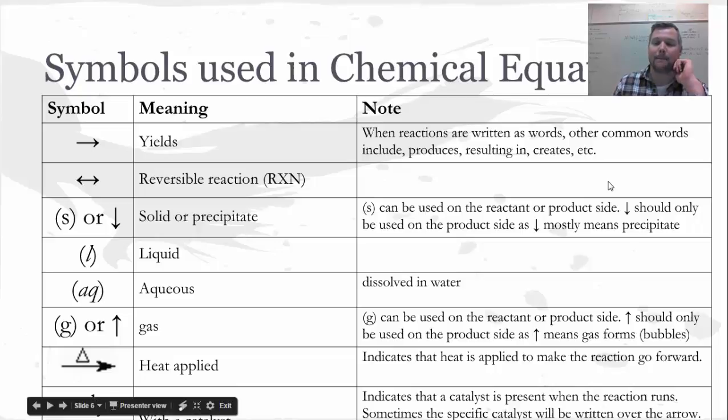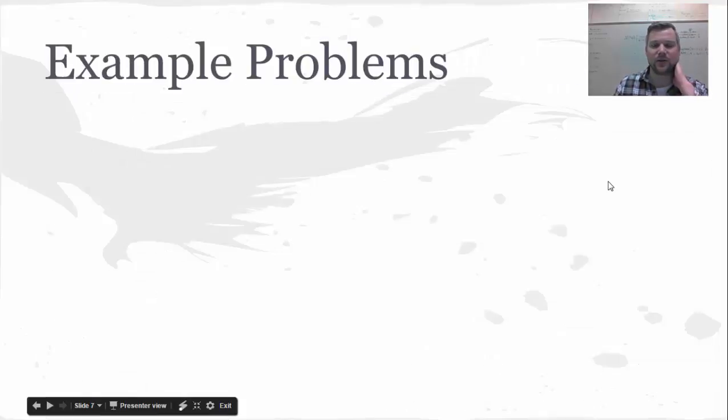Catalysts aren't reactants or products in the chemical reaction which is why we would draw them over the arrow because they're not chemicals that are actually changing in the chemical reaction overall. Notice that that's written over the arrow. We use aqueous a lot in many of our chemical reactions so be familiar with this one and then we use the yields arrow in every single reaction so make sure that you understand that if we use the word yields that's the same as kind of like equals or turns into.